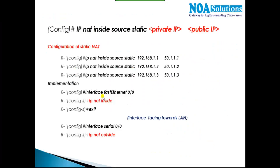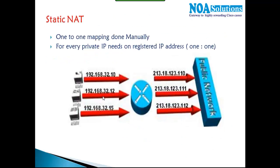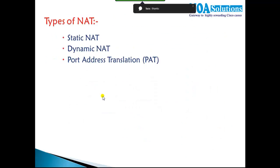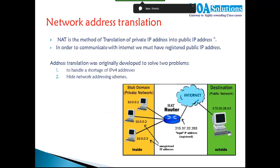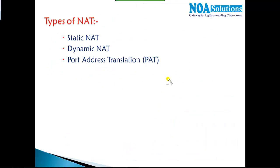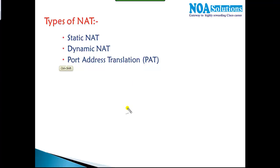To summarize, we've covered three different types of NAT implementations. In production environments, PAT is by far the most common, because PAT allows thousands of private IPs to be translated with a single public IP address.